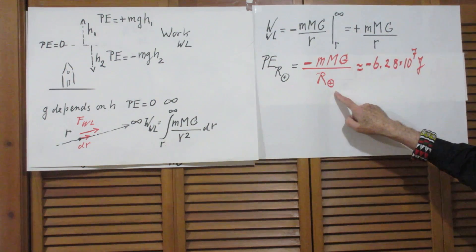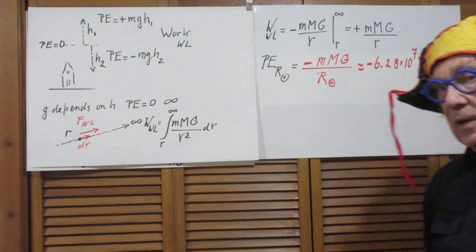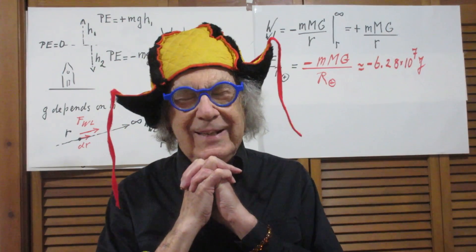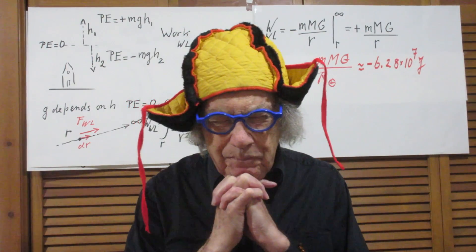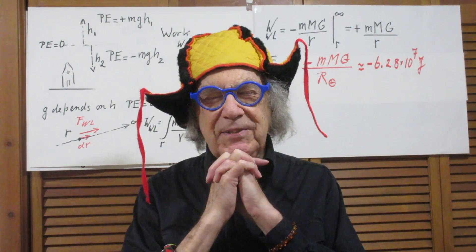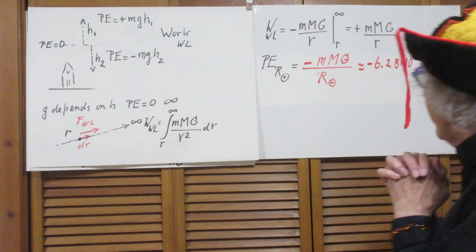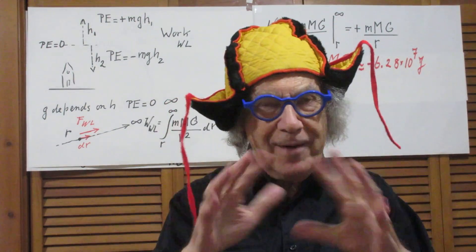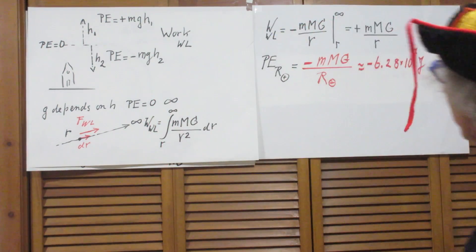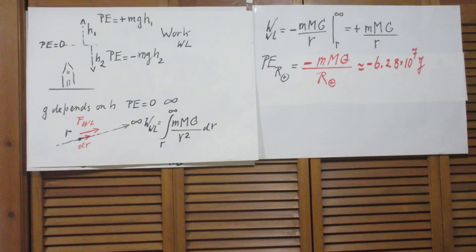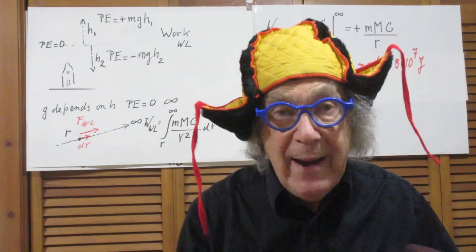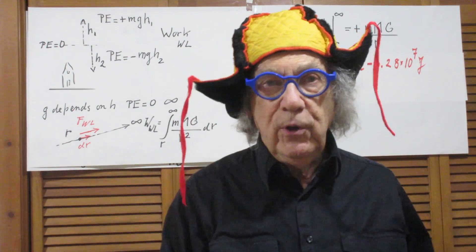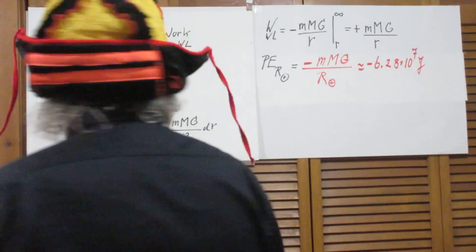Putting in the numbers: little m is 1 kg, the mass of the Earth is approximately 6×10²⁴ kg, capital G is 6.67×10⁻¹¹, and the Earth's radius is about 6,400 km. All of that you have to bring back to MKS of course. You find that the gravitational potential energy at the surface is about minus 6.3×10⁷ joules — minus, of course, because if it is zero at infinity, all values from infinity to the Earth have to be negative. So that was not so difficult.